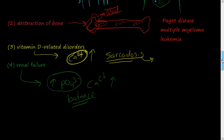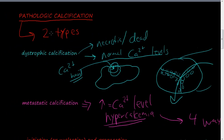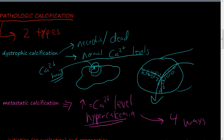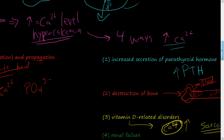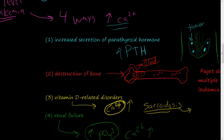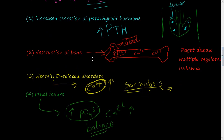So these are the ways in which we can get pathological calcification. We can have dystrophic calcification, which usually occurs in necrotic or dead tissues and usually has normal calcium levels. Or we can have metastatic calcification, which is due to hypercalcemia — an increase in calcium levels. There are four main ways to have an increase in calcium levels: increased parathyroid hormone, some kind of destruction of bone, vitamin D-related disorders, and renal failure. We'll see you in the next video.